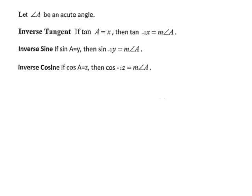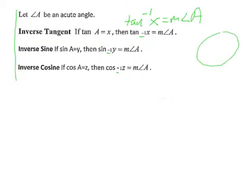The inverse trig notation uses a negative one exponent, so inverse tangent is written as tan raised to the negative one — but we call it inverse tangent. So the inverse tangent of x equals the measure of angle A. Let me give you inverse tangent, inverse sine, and inverse cosine.